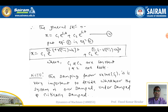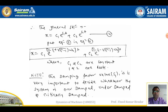The general solution for the damped system is x = C₁·e^(s₁t) + C₂·e^(s₂t) — equation four. Substituting equation three into equation four gives the final equation: x = C₁·e^[(−ζ + √(ζ²−1))·ωn·t] + C₂·e^[(−ζ − √(ζ²−1))·ωn·t], where C₁ and C₂ are constants and s₁, s₂ are the roots.